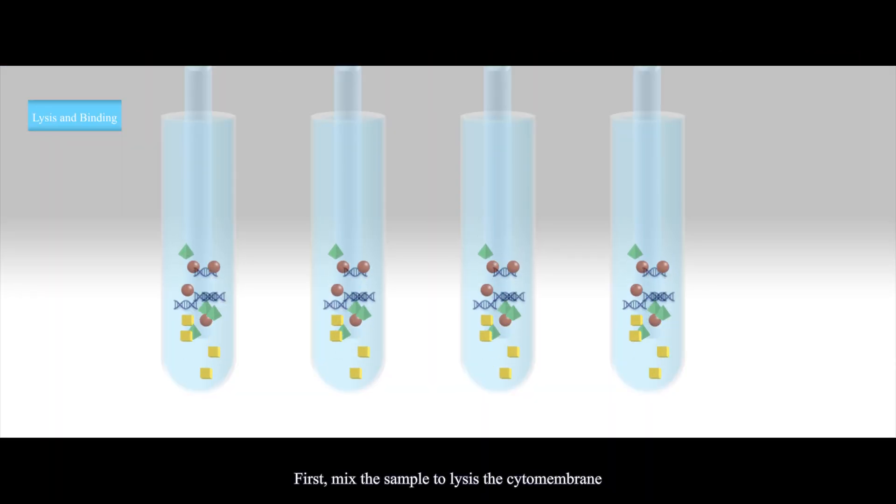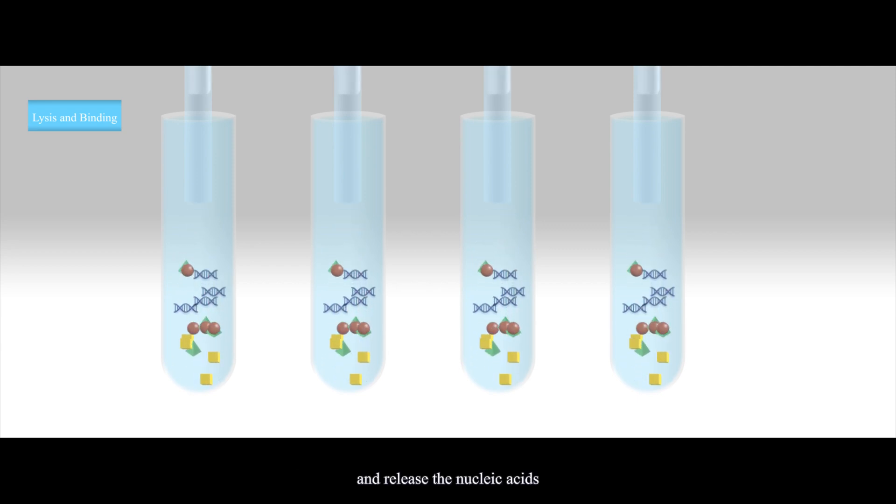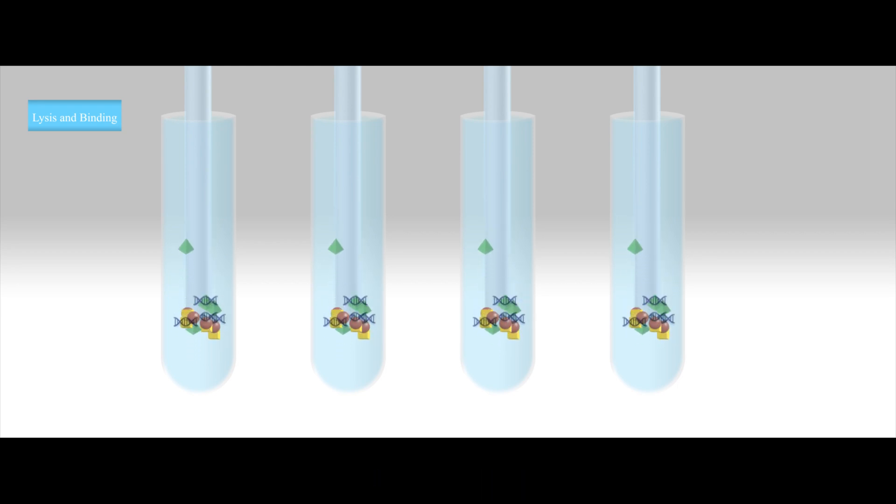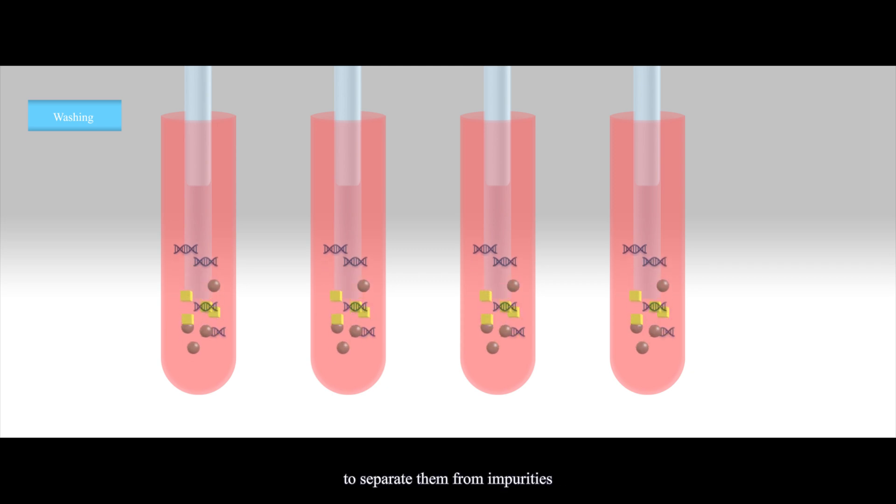First, mix the sample to lyse the cytomembrane and release the nucleic acids. Second, the magnetic rods absorb the nucleic acids to separate them from impurities.